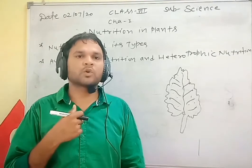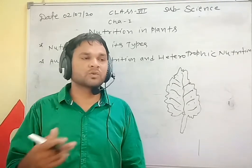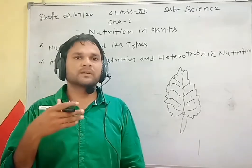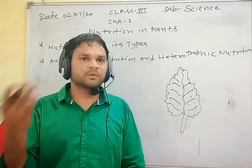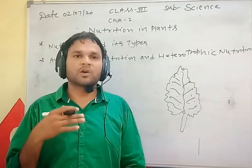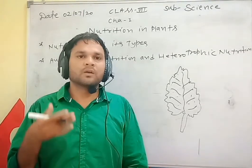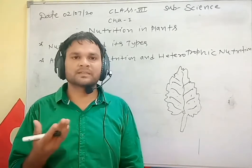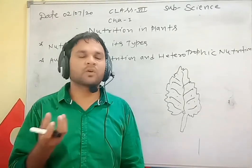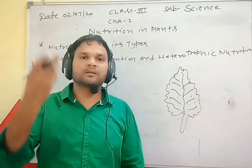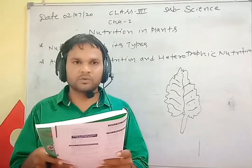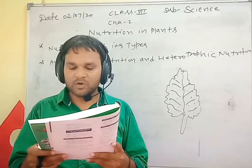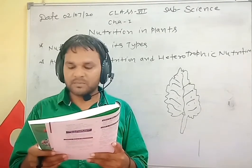We are not autotrophic — we are heterotrophic. Autotrophic is only green plants. Green plants prepare food by the synthetic process using carbon dioxide, water, and sunlight. Plants get energy to prepare food from sunlight. This mode of nutrition where green plants make food by synthesis is called autotrophic nutrition.